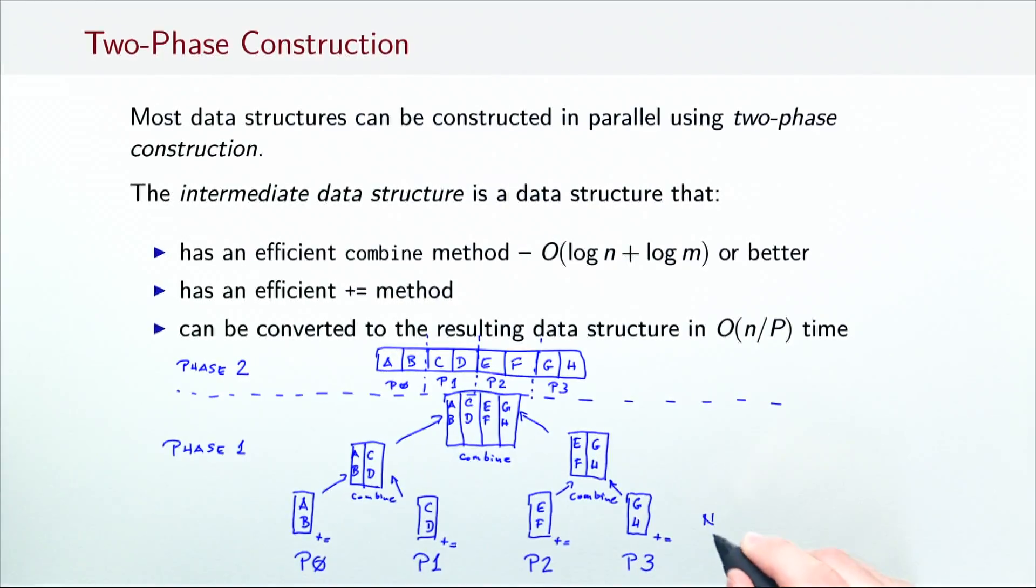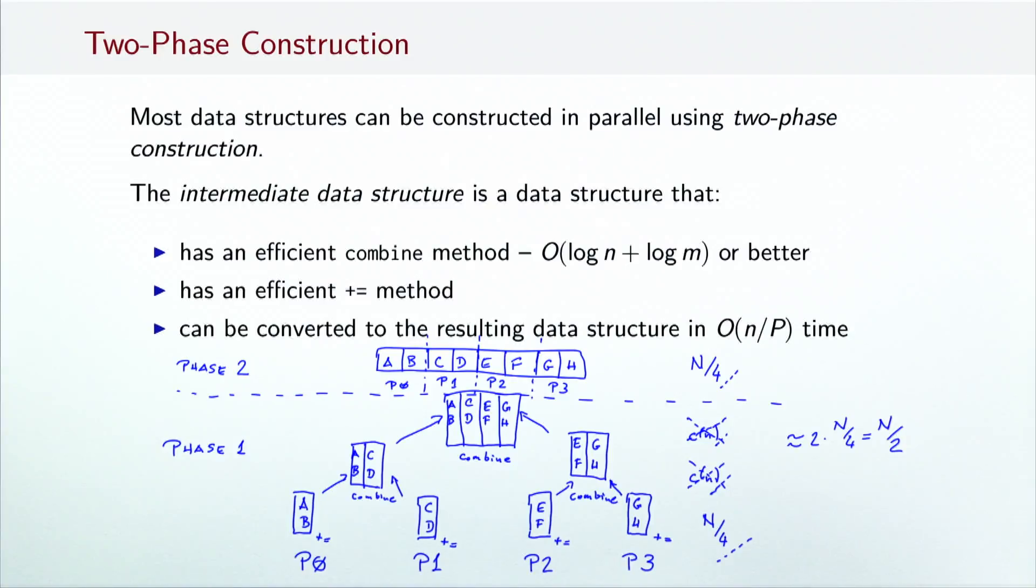Ignoring constant factors in the computation, the total running time in our example is N divided by 4 plus 2 times C of N, where C of N is the combined running time, plus N divided by 4. We expect C of N to be small, so we can ignore it. That is roughly, in total, N divided by 2 computational steps. 4 processors halve the running time of constructing the final data structure.